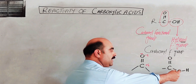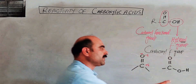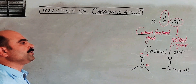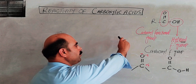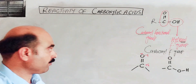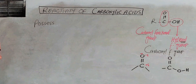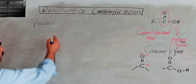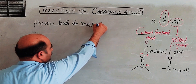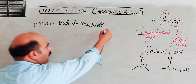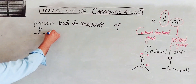All the characteristic reactions of alcohol are due to the O-H group. All the characteristic reactions for the carbonyl group are due to the carbonyl. When the carboxyl group has reactions, they possess both the reactivity of carbonyl compounds and alcohol, just like aldehydes and alcohols.